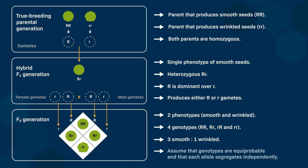Based on the known dominance of uppercase R over lowercase r, the first three combinations must produce smooth peas, and the last combination must produce wrinkled peas. This interpretation implies that each allele, whether uppercase R or lowercase r, segregates independently during the formation of gametes.